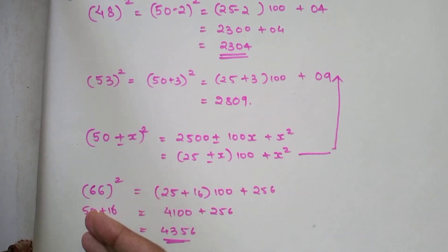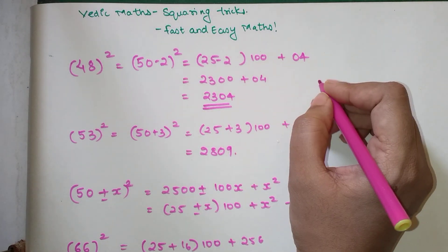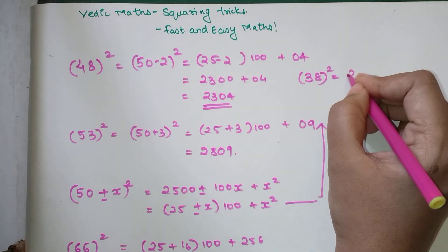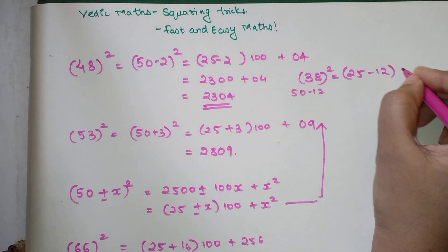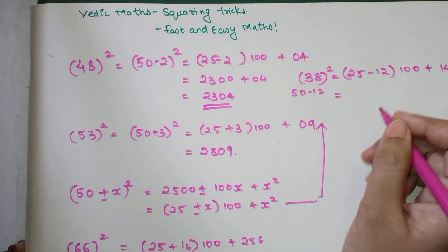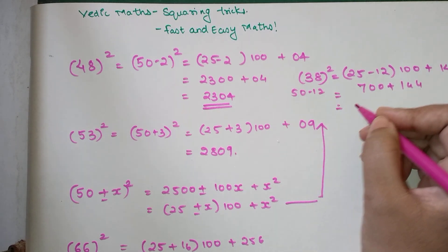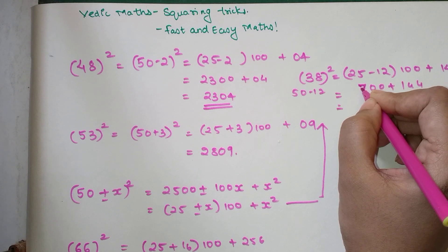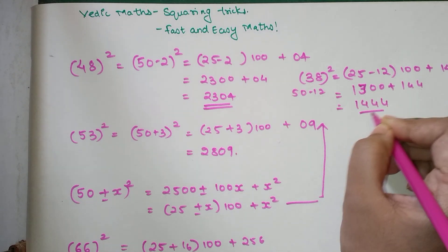Now, you must be thinking that this is for addition. Addition is always easier. Let's see what happens when you do a subtraction sum. So let's try to find out 38 square. So again, 25, this is nothing but 50 minus 12. So 25 minus 12 into 100 plus 12 square is 144. So 25 minus 12 is 13. So 1300 plus 144. So my final answer is 1444.